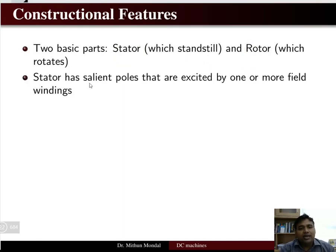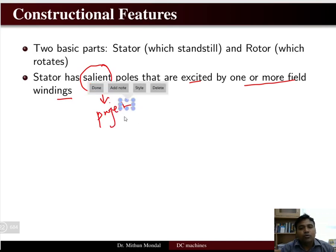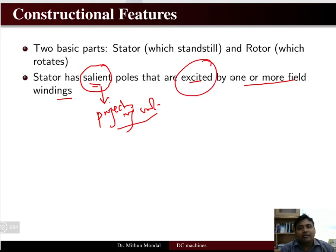The stator has salient poles that are excited by one or more field windings. The word 'salient' means projecting out. So the stator has poles which project out and are excited by one or more field windings. Conductors are wound over these poles to produce the flux.